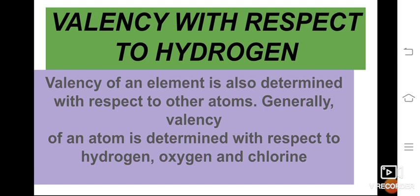Valence with respect to hydrogen — because hydrogen is the first element in the periodic table. The valence of an element is also determined with respect to other atoms. Generally, the valence of an atom is determined with respect to hydrogen, oxygen, and chlorine. These are the elements we compare with to know the valence of other elements.